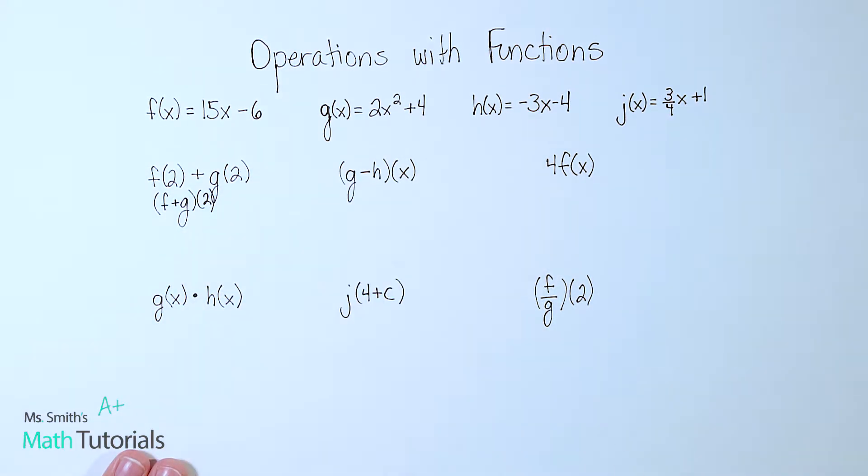For our first example, f of 2 plus g of 2. Now another way that you'll definitely see this written, sometimes you'll see it written this way, and sometimes you'll see it written as f plus g of 2. So it's important to understand that these two say the exact same thing. It just means I'm going to take my f equation, my g equation, and in the place of x, I'm going to put 2. And I'm going to add them together.